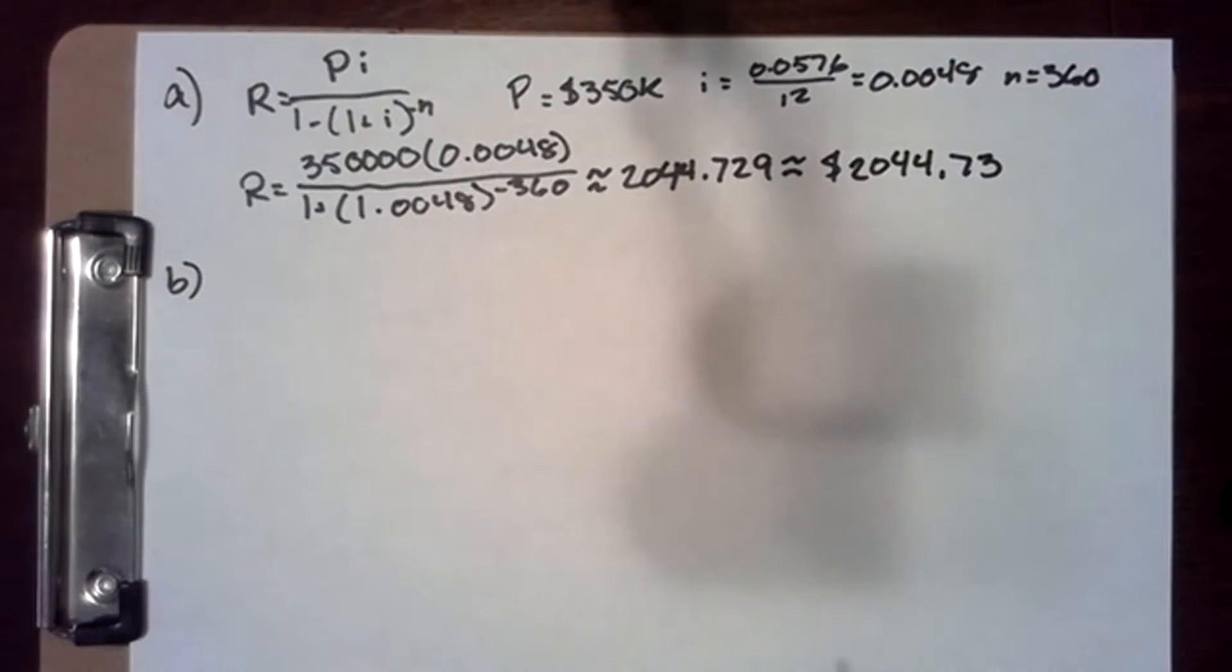For part B, we want to find the amount of the Campbells' new mortgage payment. We need to find their outstanding principal, which is given by the present value of the remaining mortgage payments.